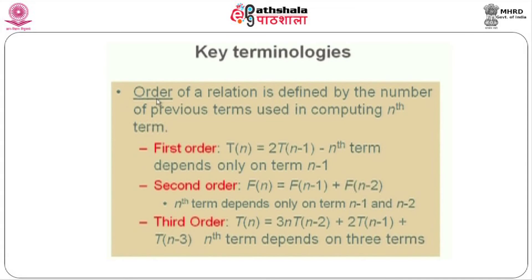The concept of order is also very important. The order is determined by how many previous terms are used for computing the nth term. For example, in T(n) = 2·T(n-1), only one term is used, so we call this a first order equation. On the other hand, in the Fibonacci series, two terms are used for computing the present term, so it is a second order equation. If three terms are used, it becomes a third order equation.